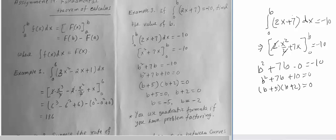From this you can easily see b is negative 5 and b is negative 2. These are the answers: when b is either negative 2 or negative 5, then the integral will be negative 10.